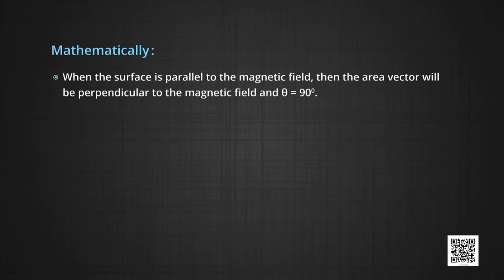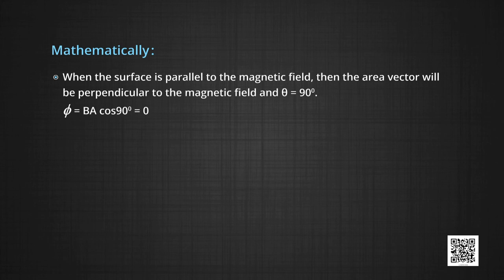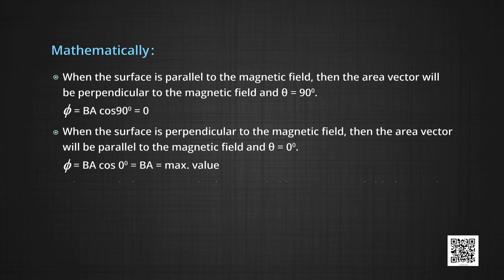When the surface is parallel to the magnetic field, the area vector will be perpendicular to the magnetic field and θ = 90°, so Φ = B A cos 90° = 0. When the surface is perpendicular to the magnetic field, the area vector will be parallel to the magnetic field and θ = 0°, so Φ = B A cos 0° = B A, which is the maximum value of the flux.